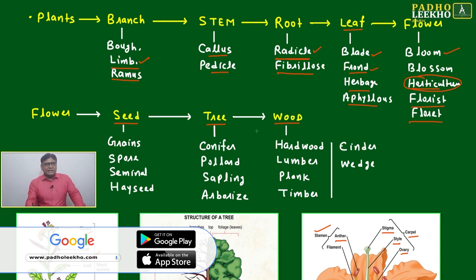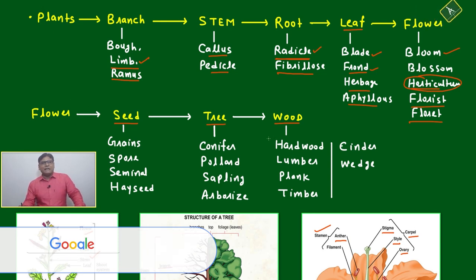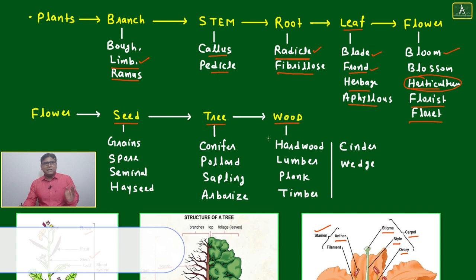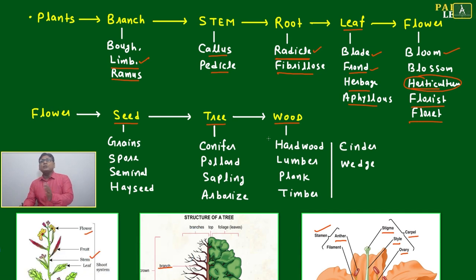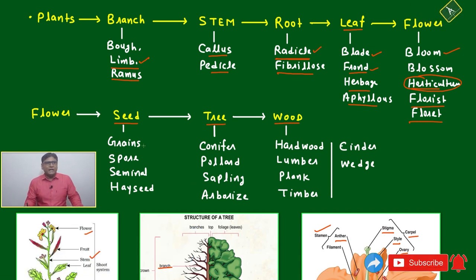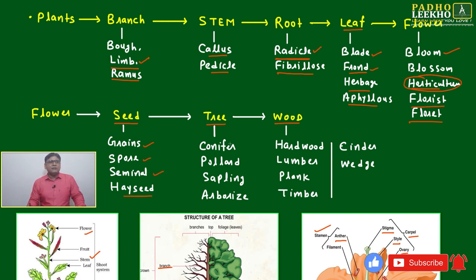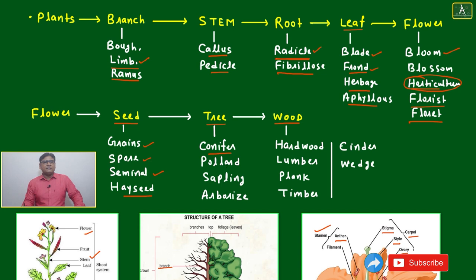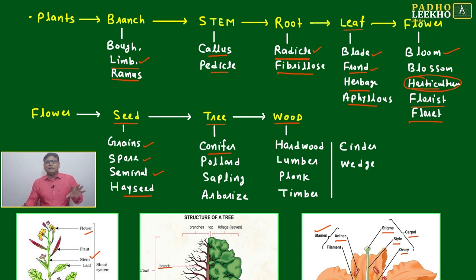For understanding the plant, this logical connective is enough: plant, branch, stem, root, leaf, flower, seed, tree, wood. Then seed will come in grains, spore, seminal, and hay seed.